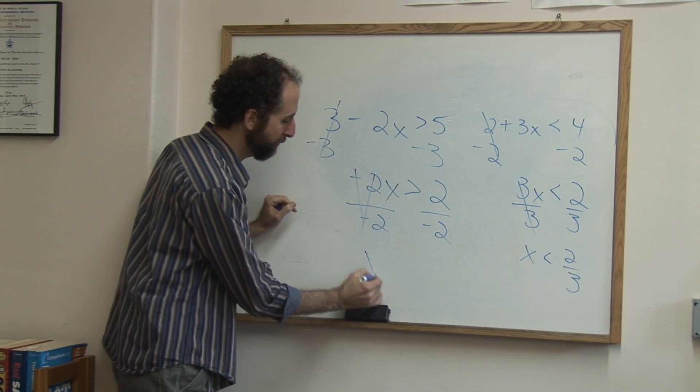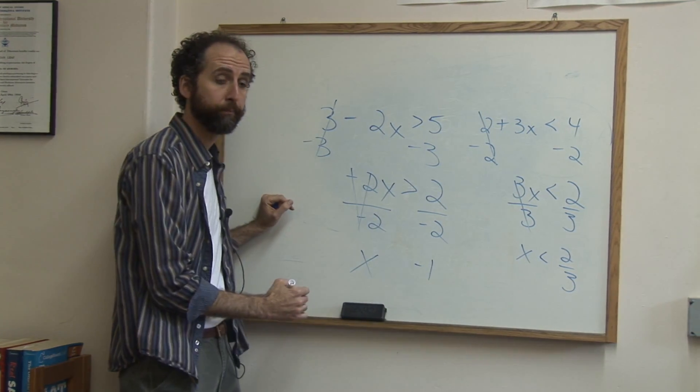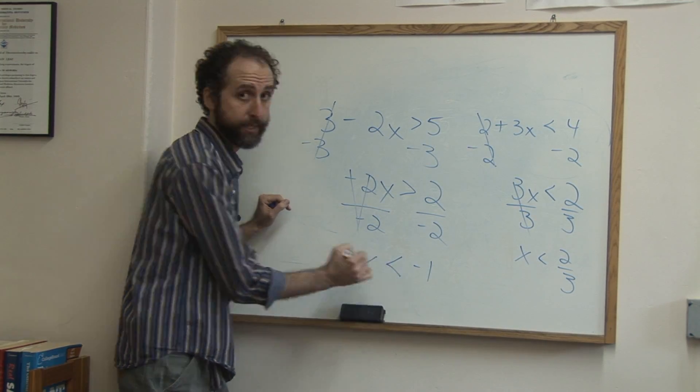So this cancels, give me x alone. 2 over negative 2 is negative 1. And instead of being greater than, it's going to be less than.